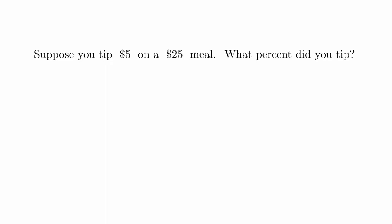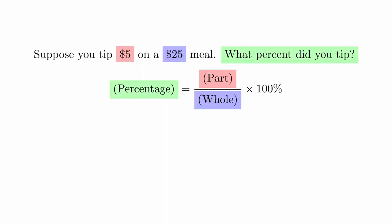For example, suppose you tipped $5 on a $25 meal. To determine the tip percentage, you need to identify the variables in the formula. The $25 price tag for the meal is the quantity we're measuring the tip size against, so that is the whole. The tip is the quantity you're measuring relative to the cost of the meal, and that is your part. The percentage is the number you're trying to determine.